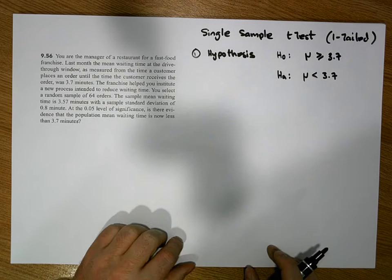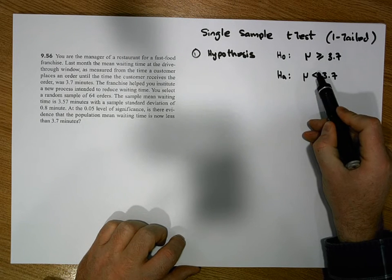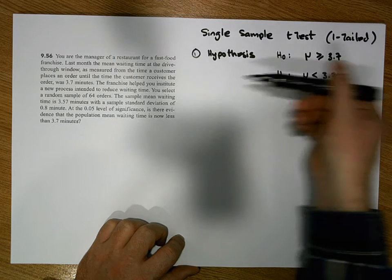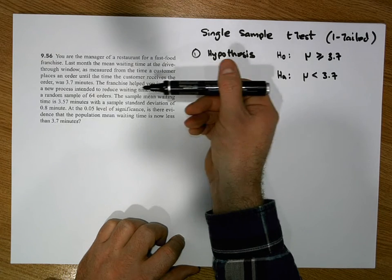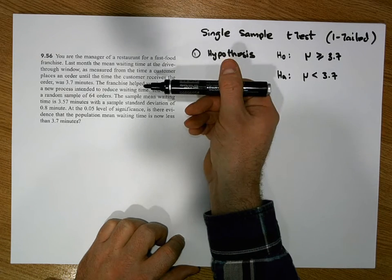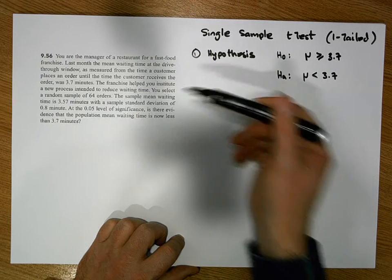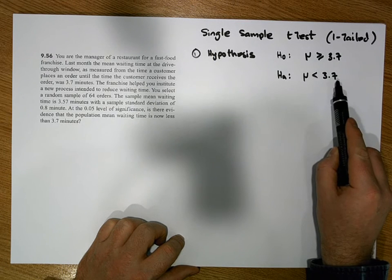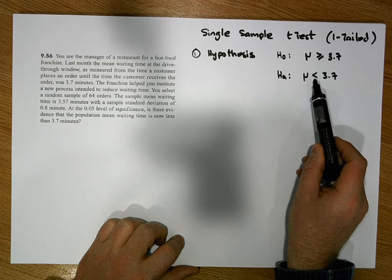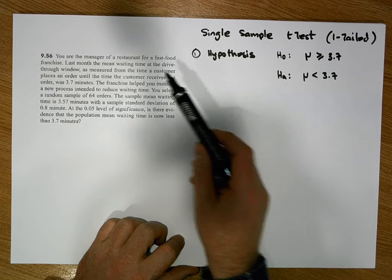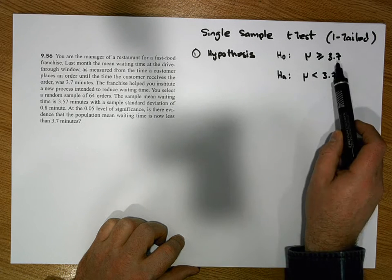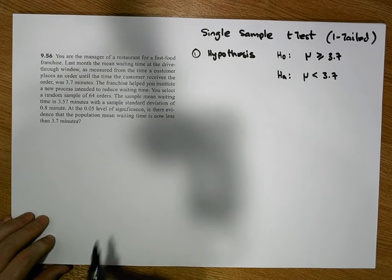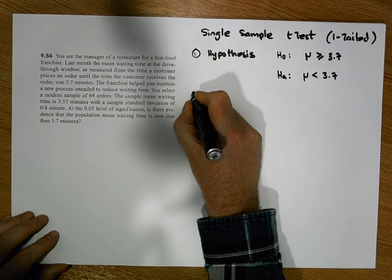Because the alternative has a specific direction, this is known as a one-tail test. The less-than sign points in the direction where our evidence needs to reside — it's a left-tail test. To reject the null hypothesis in favor of the alternative, the evidence must be significantly out to the left-hand side of 3.7.